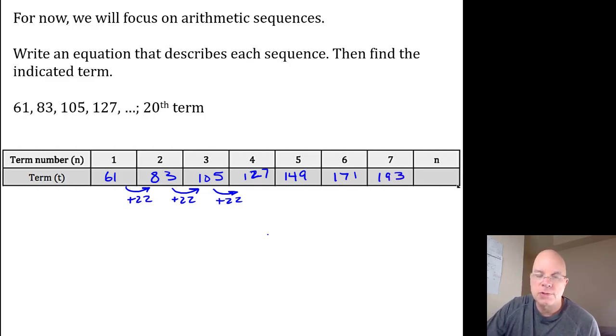So the rule is gonna have something to do with multiplying n by positive 22, 22n. But when n equals 1, 22n would give us 22, but I want 61.